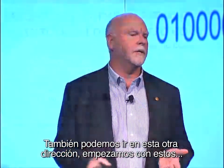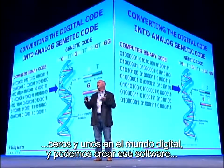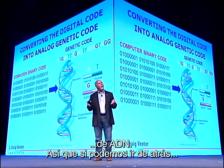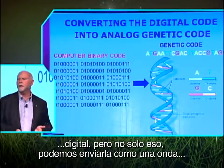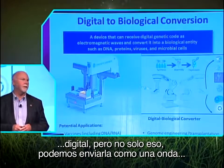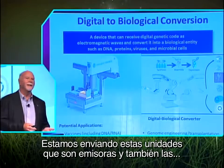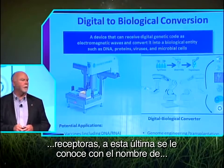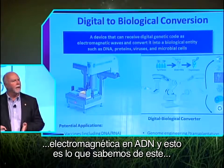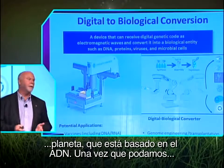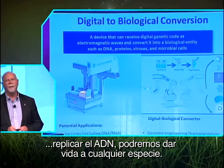We can now clearly go in the other direction as well. We can start with ones and zeros in the digital world and go back to make DNA software. If you can go back and forth in the computer, all of a sudden we can treat life as digital information. We can actually send that digital information as an electromagnetic wave at the speed of light. So we're building sending units and receiving units — we call our receiving unit a digital-to-biological converter. This can take the electromagnetic wave, convert it back into DNA. Since all life on this planet is DNA-based, once you can remake DNA, you can remake the software of life. In theory, you can remake any life.